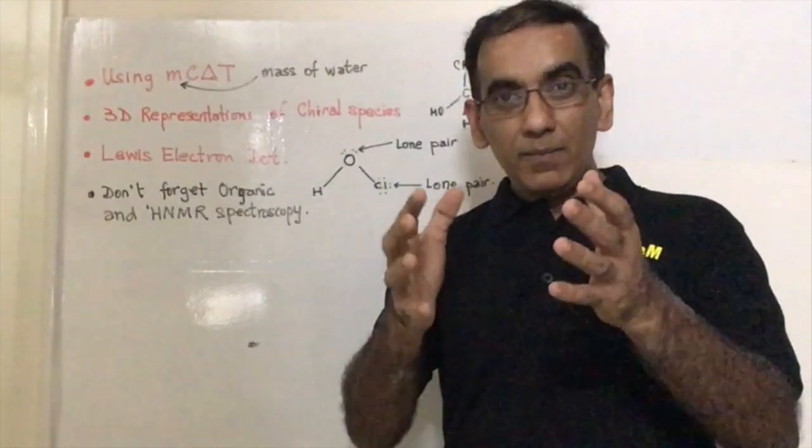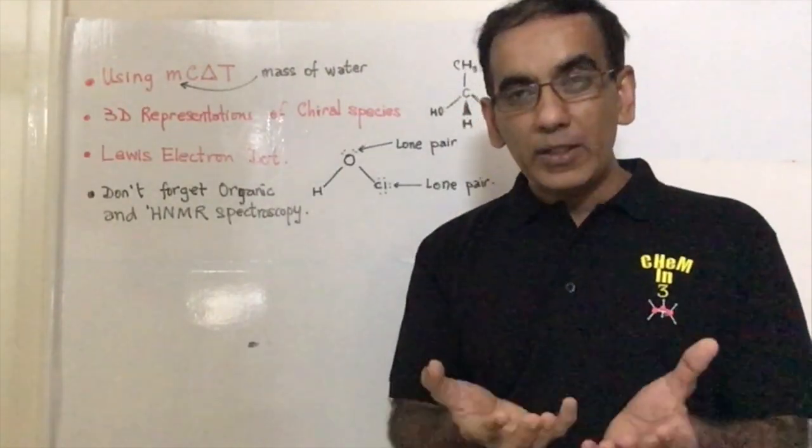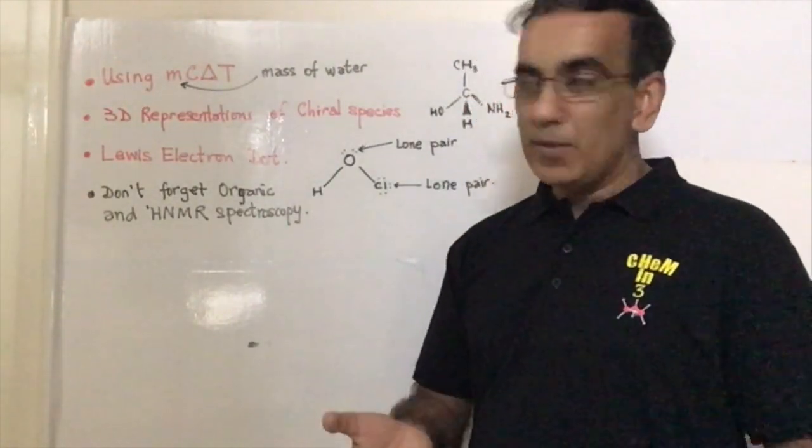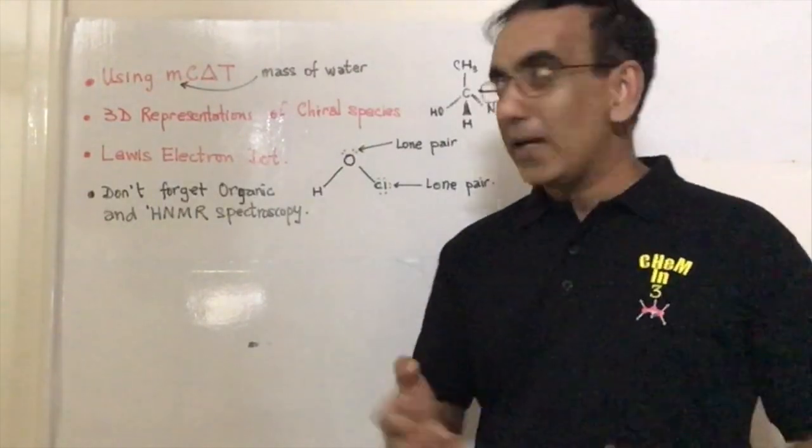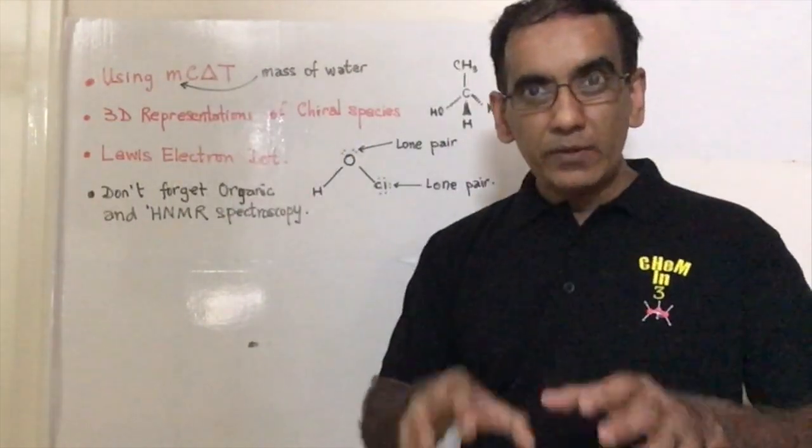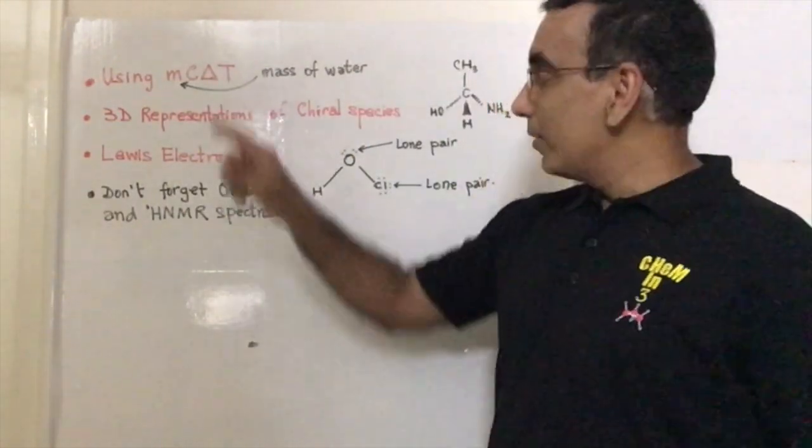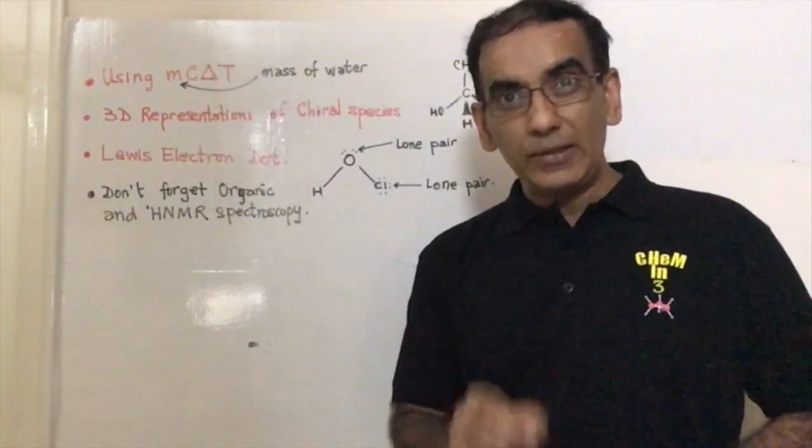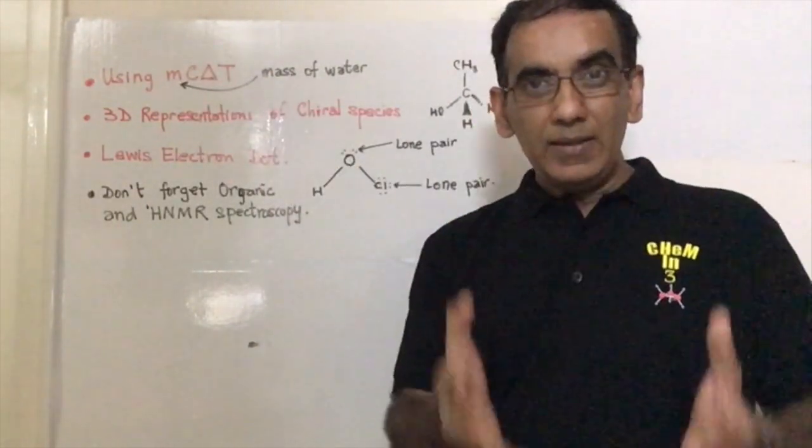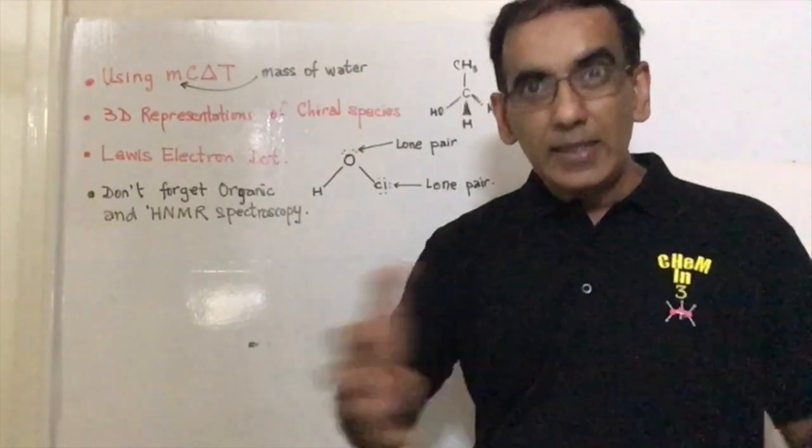And sometimes, and of course you can adjust that mass based on the mass of the salt or the substance that's being dissolved, but the mass to be used in MC delta T calculations is primarily the mass of water contained in the reaction vessel.